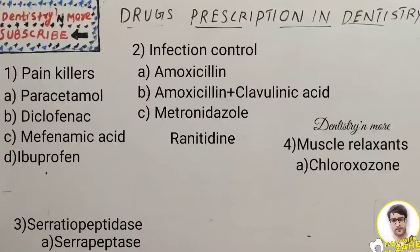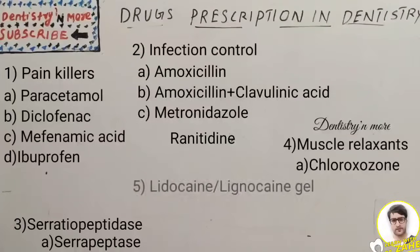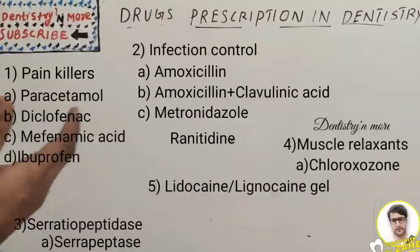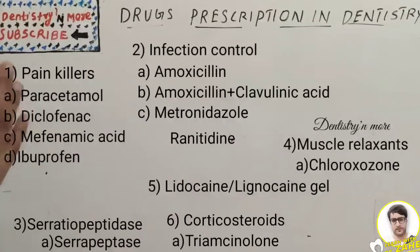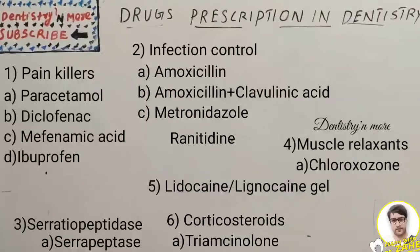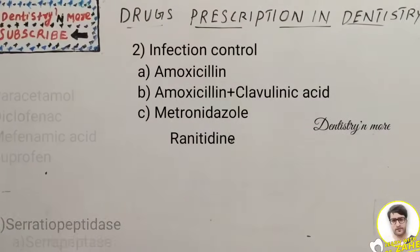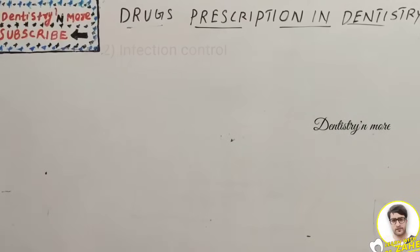We also have serratiopeptidase, which is another group of drugs used to reduce swelling. Chlorzoxazone is a muscle relaxant. For ulcer pain, we can give lignocaine or lidocaine topical gel. For autoimmune diseases, we can prescribe steroids such as triamcinolone.